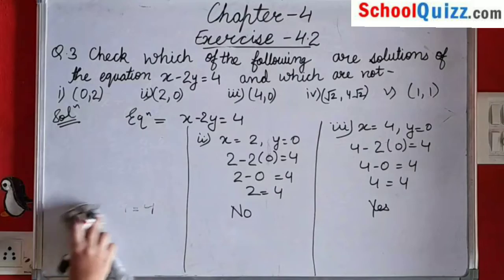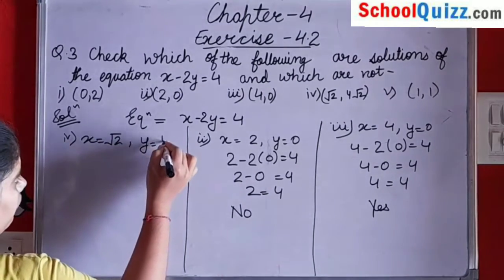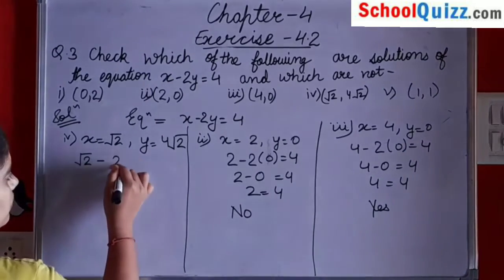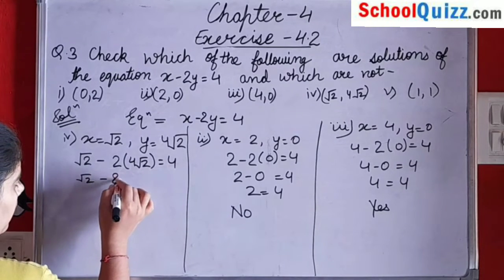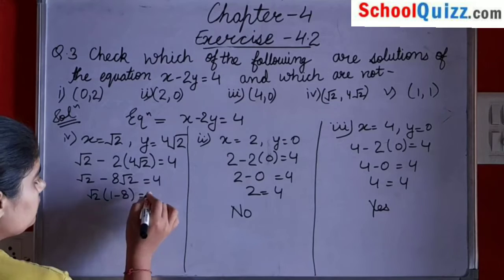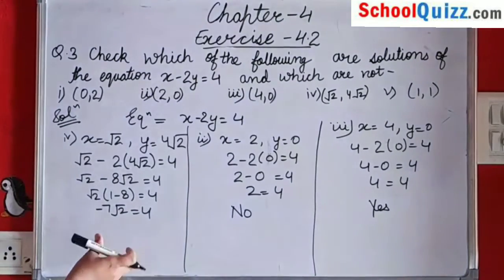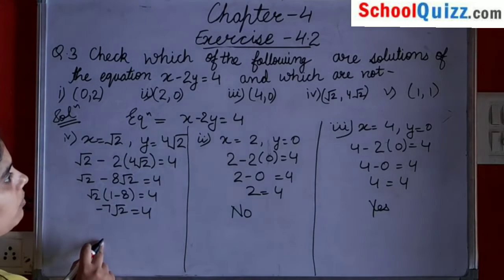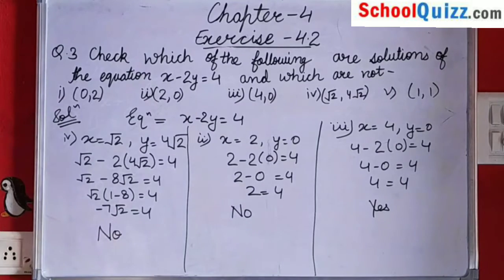Now checking for the fourth part. x given is root 2 and y given is 4 root 2. Putting these values: root 2 minus 2 into 4 root 2 gives root 2 minus 8 root 2, which equals root 2 times (1 minus 8), giving minus 7 root 2 equals 4. These are not equal, so (root 2, 4 root 2) is not a solution of x minus 2y equals to 4. Its answer is no.